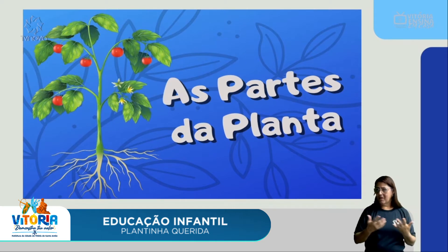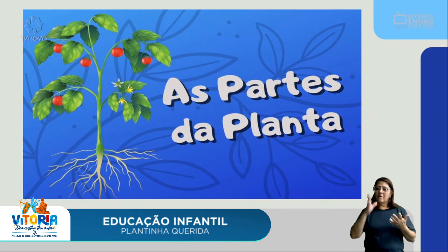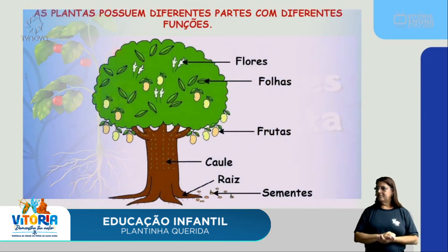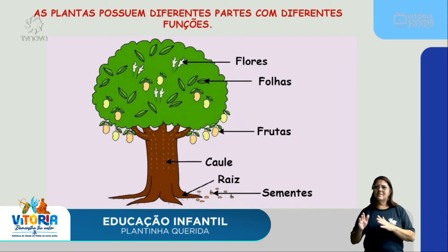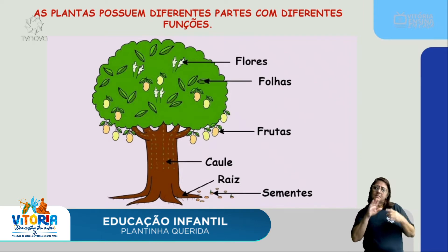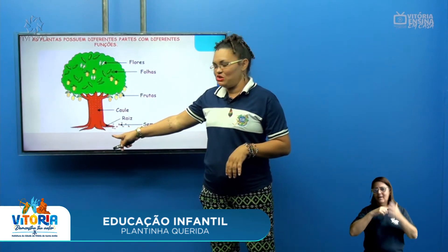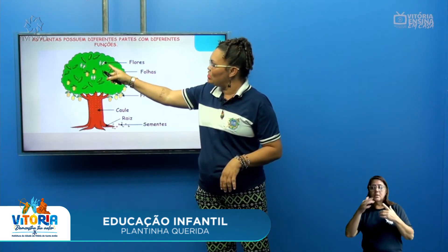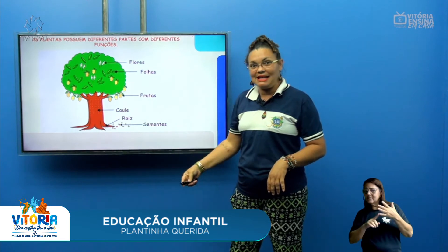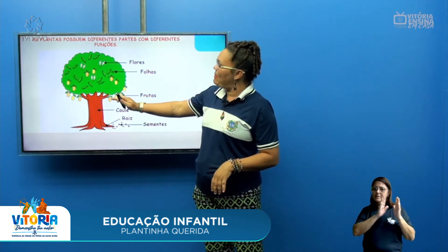Agora vamos falar um pouquinho sobre as partes da planta e suas funções. As plantas possuem diferentes partes com diferentes funções. Pela imagem vocês podem observar a planta e a setinha marcando cada parte. Aqui está mostrando a raiz, aqui o caule, as frutas, as folhas e as flores. Podem observar a imagem da planta, da árvore, dividida em cada partezinha dela.